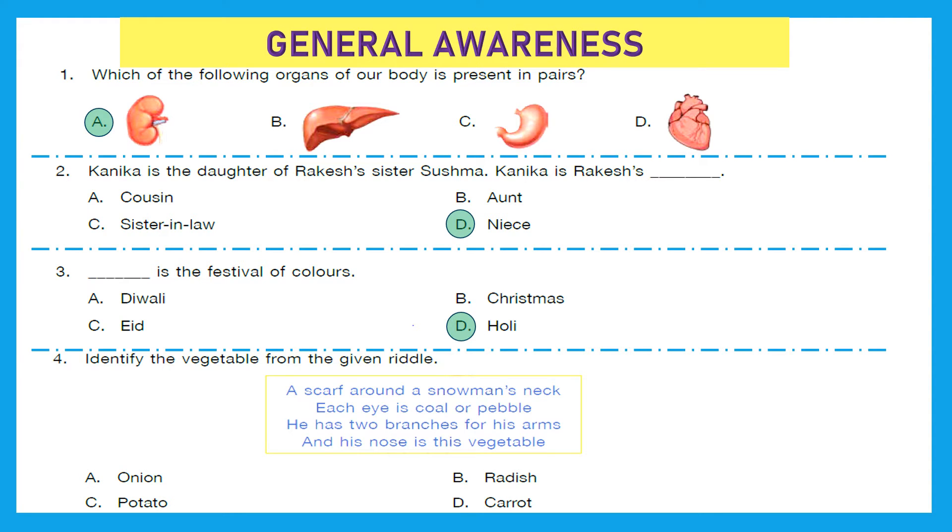Question 4: Identify the vegetable from the given riddle. I scarf around a snowman's neck. Each eye is coal or pebble. He has two branches for his arms and his nose is this vegetable. So here, the riddle is talking about snowman. And do you know what we use for snowman's nose? We use carrot. Option D is the right answer.